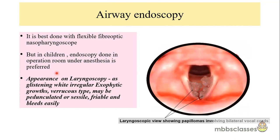Airway endoscopy gives a clear picture of the disease. It is best done with a flexible fiber optic nasopharyngoscope, and in children the endoscopy is preferred under general anesthesia. The characteristic picture of papillomas on laryngoscopy looks like glistening, white, irregular, exophytic growth or varicose type of growth which may be sessile or pedunculated. It is friable and bleeds easily. You can see the papillomas involving both sides of the vocal cords. Apart from the type of growth, we must know which sides of the airway are involved to understand the extent of the disease.